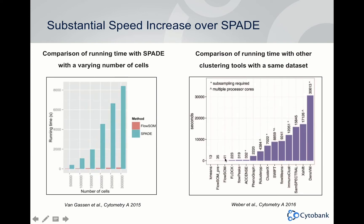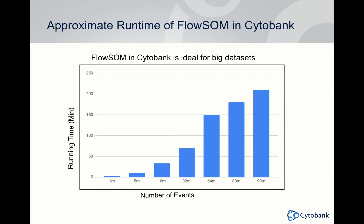These two graphs illustrate the speed advantages FlowSOM offers over SPADE and similar algorithms — it goes much, much faster. This is from the original paper where it was published, and a review paper confirmed FlowSOM is among the fastest-running algorithms. In Cytobank, our titration shows it running up to 90 million events in just over 200 minutes — much faster than SPADE in Cytobank.